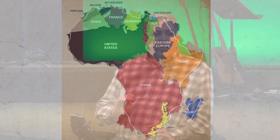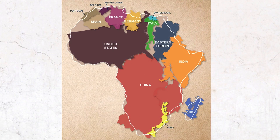I wanted to put an image up on the screen so you can see a little bit about how big the African continent is. On the upper left side, you see the dark brown area? That's the United States fitting into Africa. And that red area? That's China fitting into Africa.